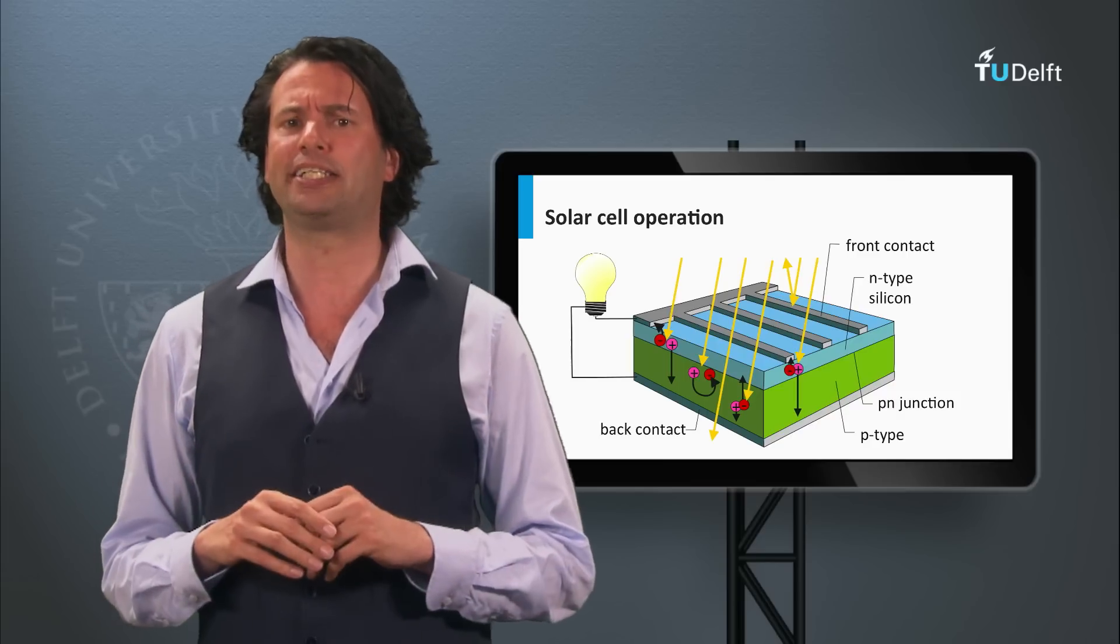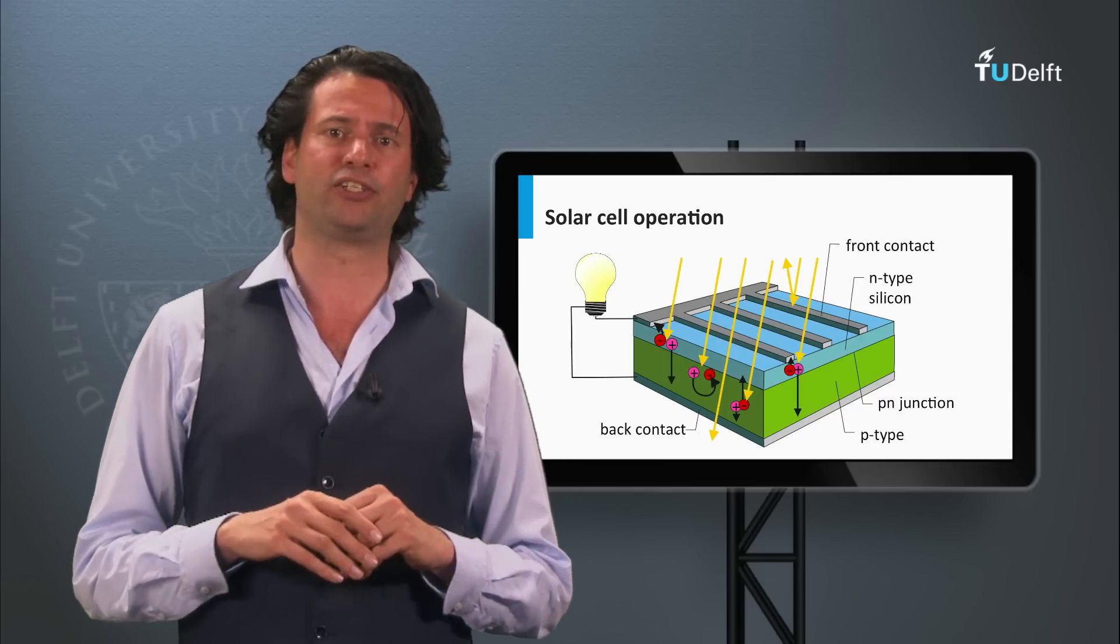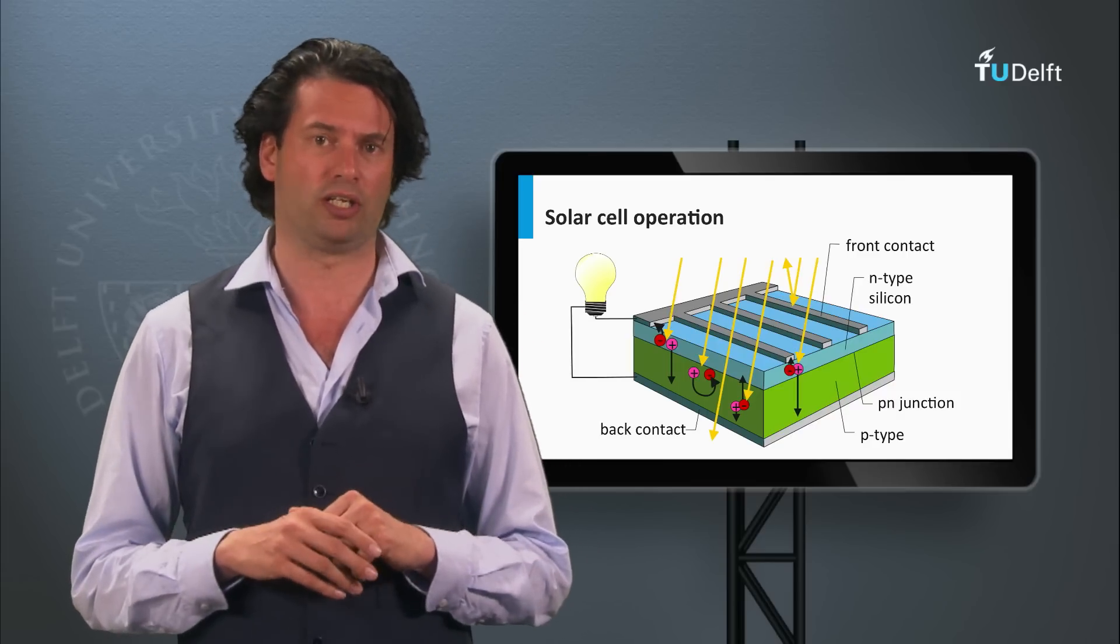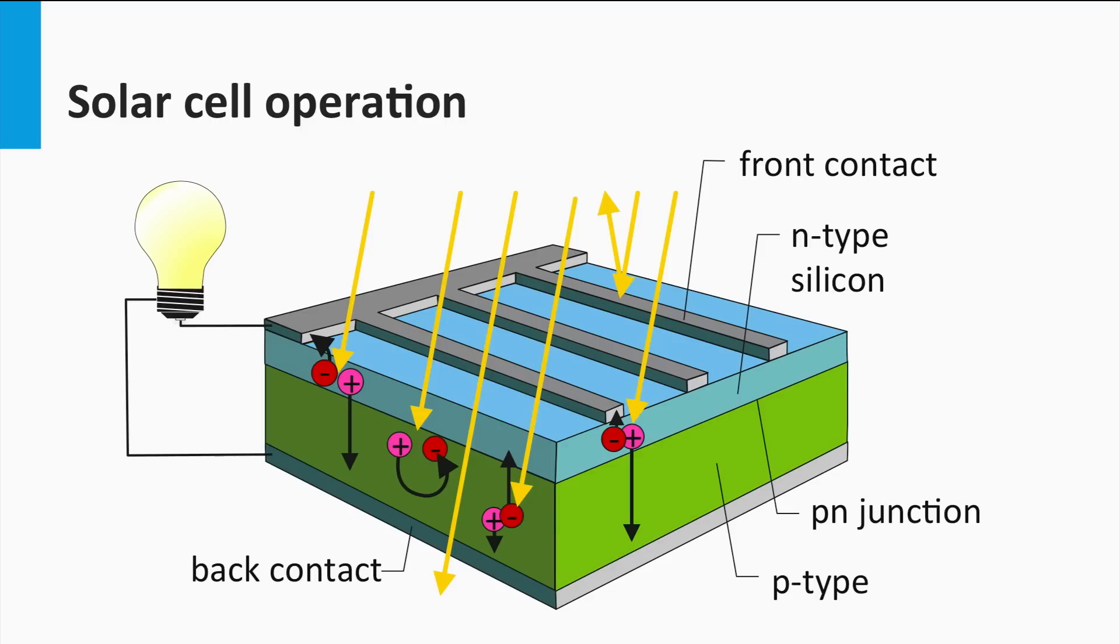Here we see a simplified representation of a silicon-based solar cell. It consists of the crystalline silicon absorber layer, a PN junction to separate the light-excited charge carriers, and a metal front and back contact.